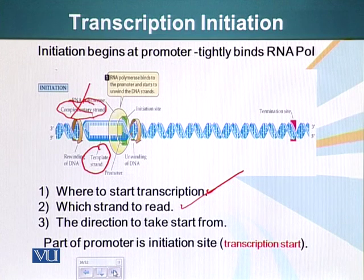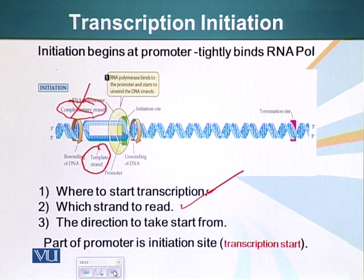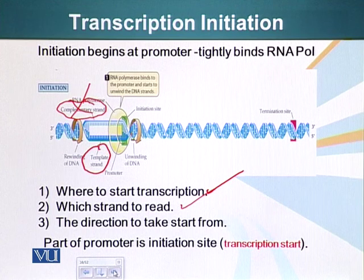The promoter also gives the RNA polymerase direction on where to start. It tells it where to start transcribing or making RNA. Part of the promoter is the initiation site where transcription will start, meaning the part of DNA which will get converted into messenger RNA is also part of the promoter.